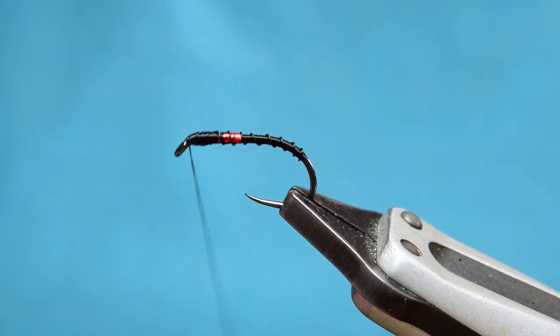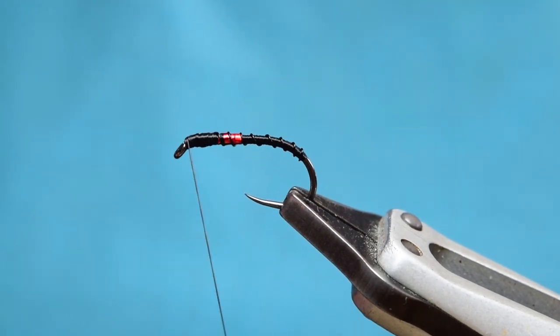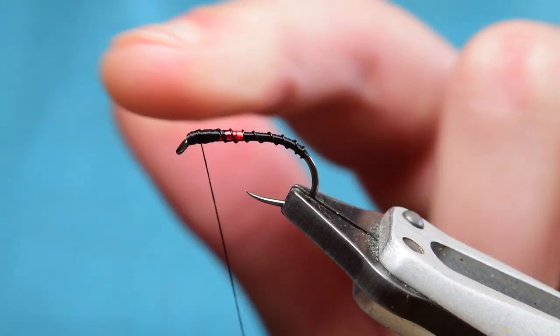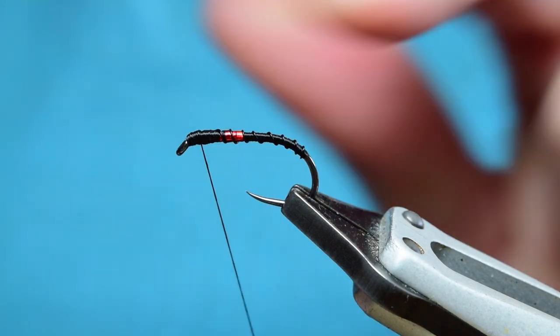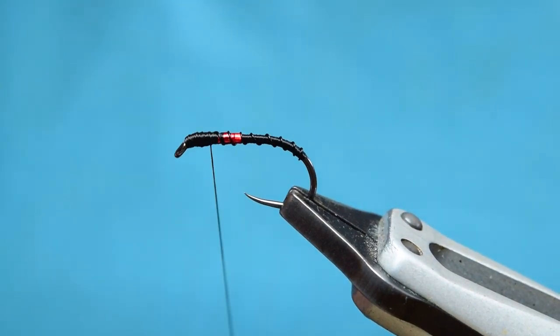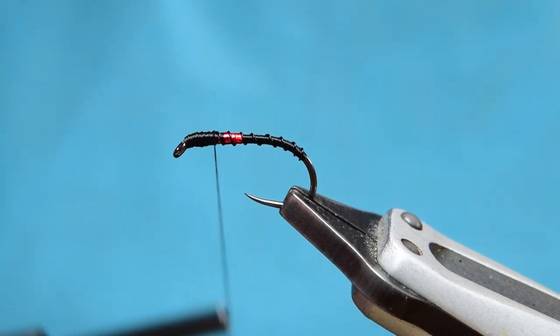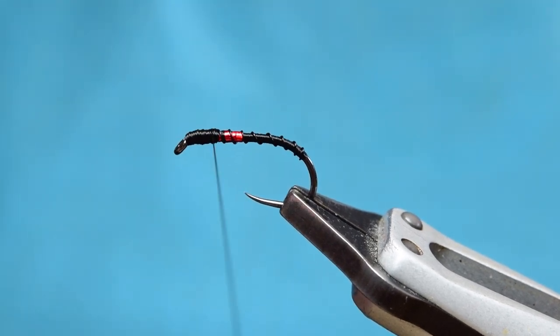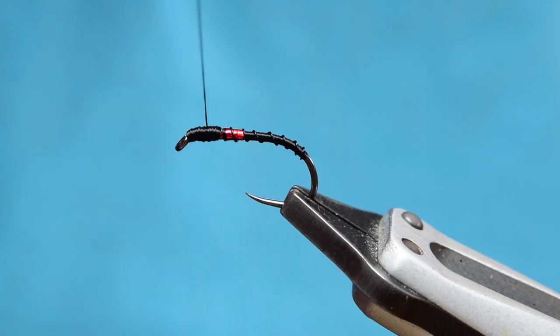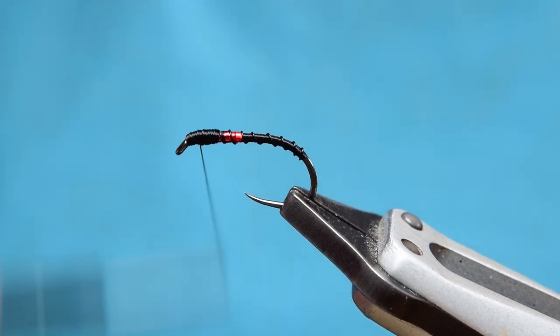What I do first is I try and get like an even playing field, so to speak. I try and get this as level as possible, this thorax section. Then what I'll do is go back to where I want my thorax to start, or my head to start, which is just where the tinsel ends.